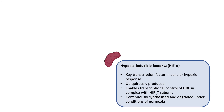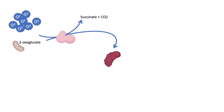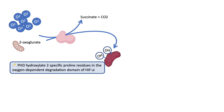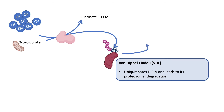HIF-alpha is continuously synthesized and degraded in normoxic conditions. Its degradation is mediated by prolyl hydroxylase domain proteins. Under normoxic conditions, when there is adequate oxygen, oxoglutarate is generated within the aerobic citric acid cycle. In the presence of oxoglutarate, prolyl hydroxylase proteins hydroxylate two specific proline residues in the oxygen-dependent degradation domains of HIF-alpha. Upon hydroxylation, von Hippel-Lindau proteins can ubiquitinate HIF-alpha, leading to its proteosomal degradation.